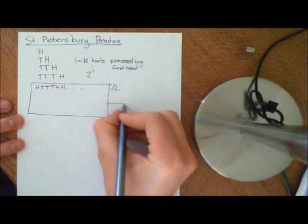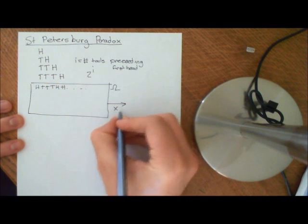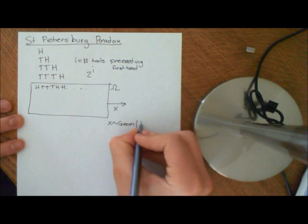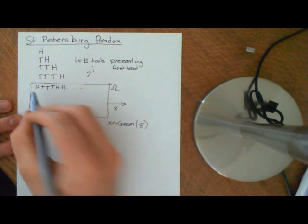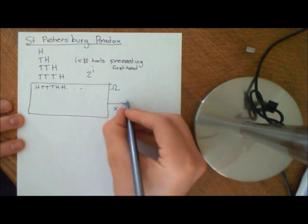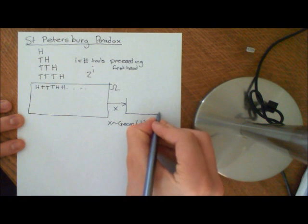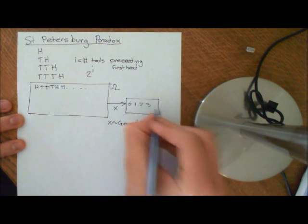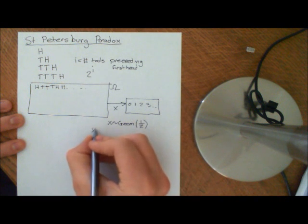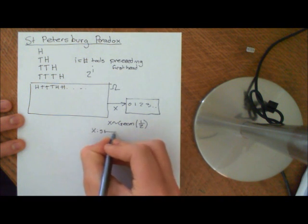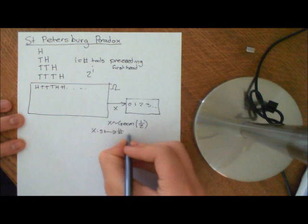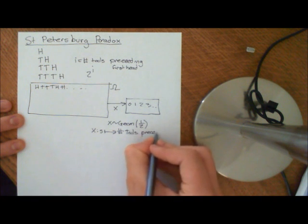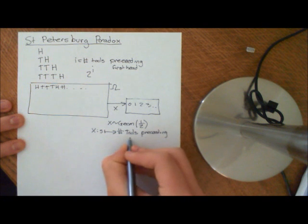You then create a random variable X, which is going to be geometrically distributed with parameter one half, because the probability of getting a head is one half. It goes on to 0, 1, 2, 3, etc. And X is going to map any outcome specifically onto the number of tails preceding the first head.